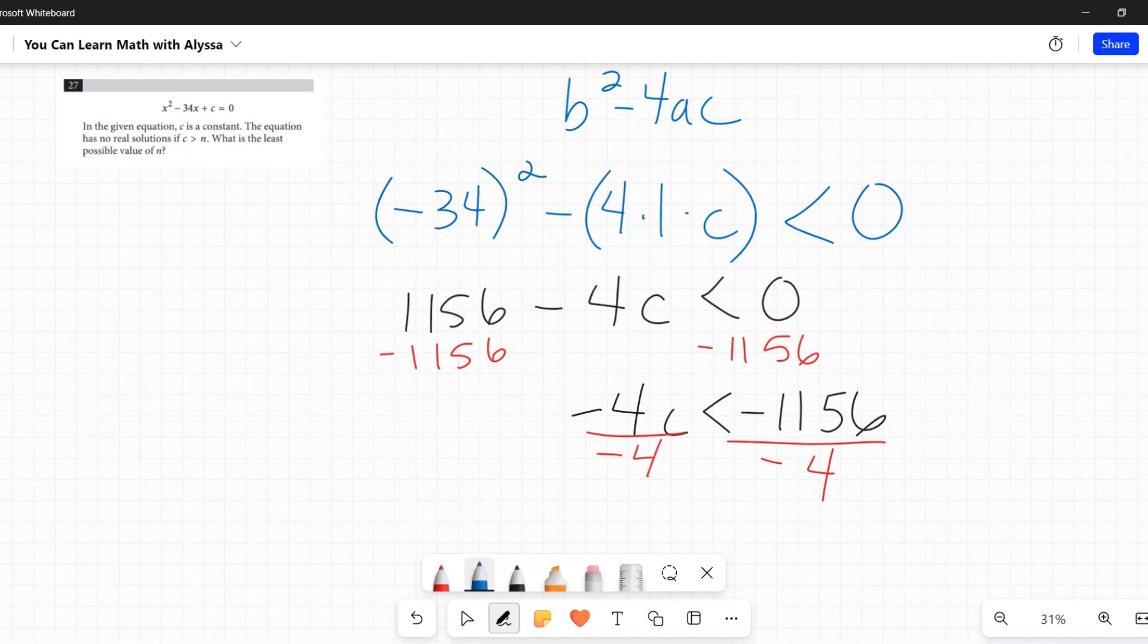...and on the right I get 289. But again, remember I need to flip that sign, so c > 289. When c is greater than 289, this is going to have no real solutions.